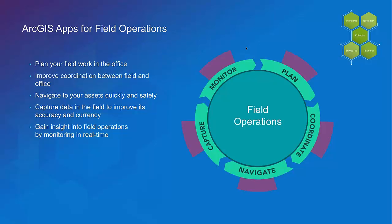A third aspect of field operations is how you navigate to the work that you do, and be able to do that in a very efficient and safe manner. When you get to the location of that work, being able to capture data in the field using mobile devices improves not only the accuracy and currency of your spatial data, but provides a more efficient means for capturing data than paper-based workflows. Finally, we have applications that help you gain insight into field operations so you can monitor the work being done, the safety and location of your mobile workforce, and gain insight into efficiency. Using ArcGIS apps for the field, you can really improve the way you're doing business today.